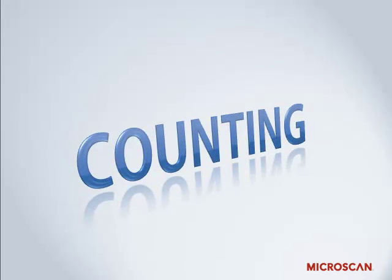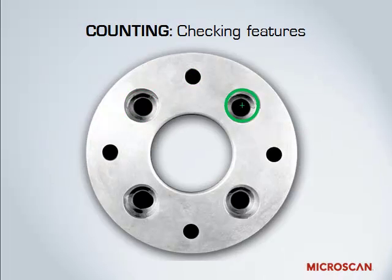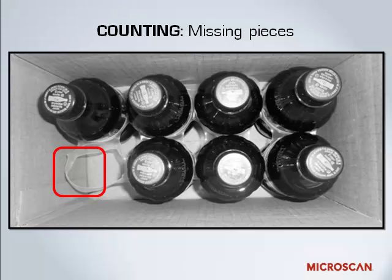Counting is another typical machine vision application. Counting means to look for a number of parts or a number of features on a part, allowing us to locate missing parts and ensure that products are assembled properly. This example shows an aluminum flange with some holes drilled in it — if you count the number of holes, you'll see that there are exactly eight of them, confirming the drilling process was done properly. Another counting function is absence/presence — is it there or not? Here we have an eight-pack of sodas, and you can see that one of the sodas is missing. With machine vision, that packaging can be checked to make sure an incomplete pack doesn't make it to the grocery store shelf. We've slowed the process down so you can see it, but machine vision systems can operate much faster.